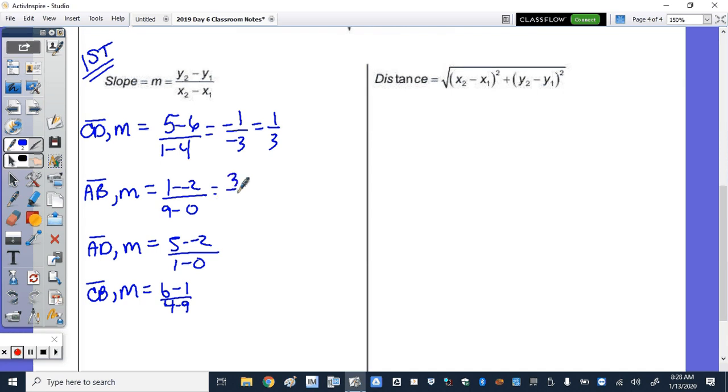Here we end up with 3/9, which is equivalent to 1/3. Good. Here we end up with 7 over 1, which is 7. And 5 over negative 5, which is a negative 1. So this is what we did want to happen. We wanted the bases, CD and AB, to have equal slopes. So I'm going to make little notes. So that tells me CD is parallel to AB. And the unequal slopes, put the little therefore sign in, means that AD is not parallel to CB.